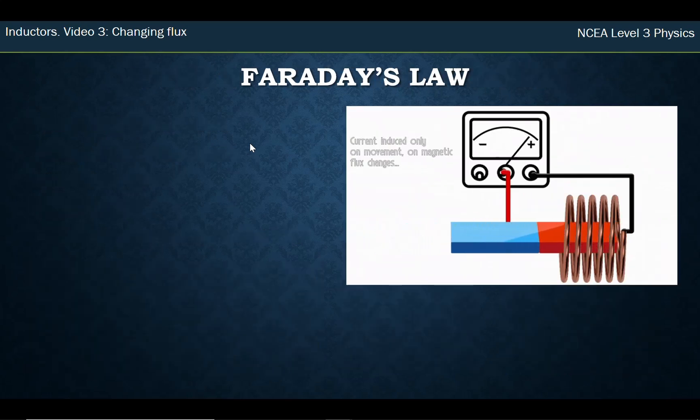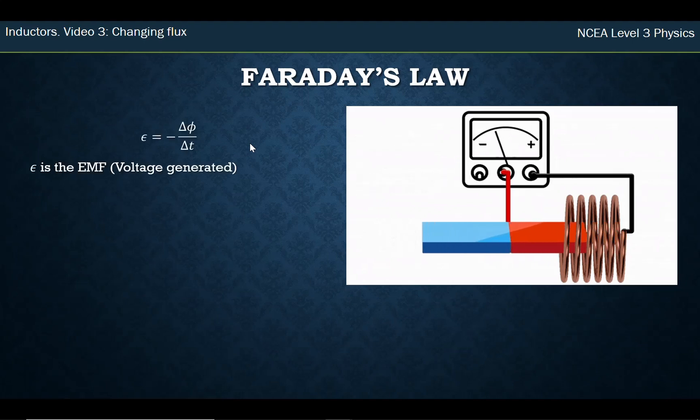Faraday's law is a calculation for how much voltage we induce. The epsilon, the funny E, is EMF, which you've learned earlier in this course is the true voltage. Delta phi—remember any triangle delta is a change—so we're looking at the change in flux over the change in time. That's really saying how fast is the flux changing.